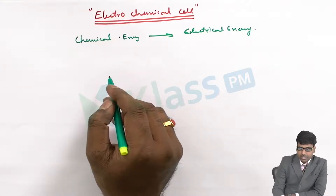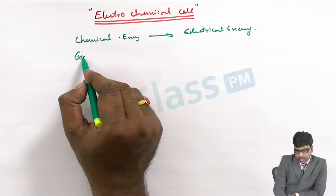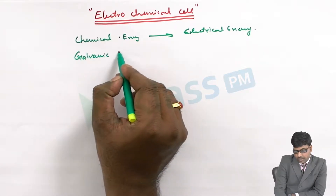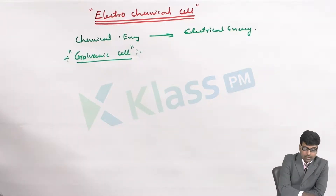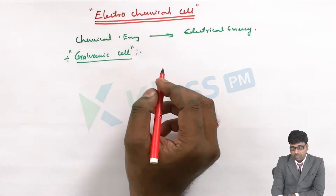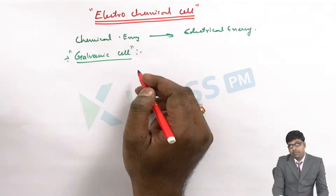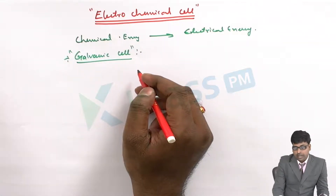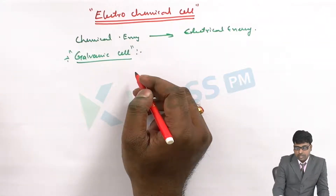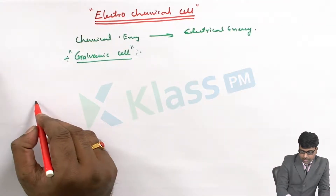This electrochemical cell is also called a galvanic cell, named after the scientist Galvani. Let's see an example of this electrochemical cell and we will see the working of it.